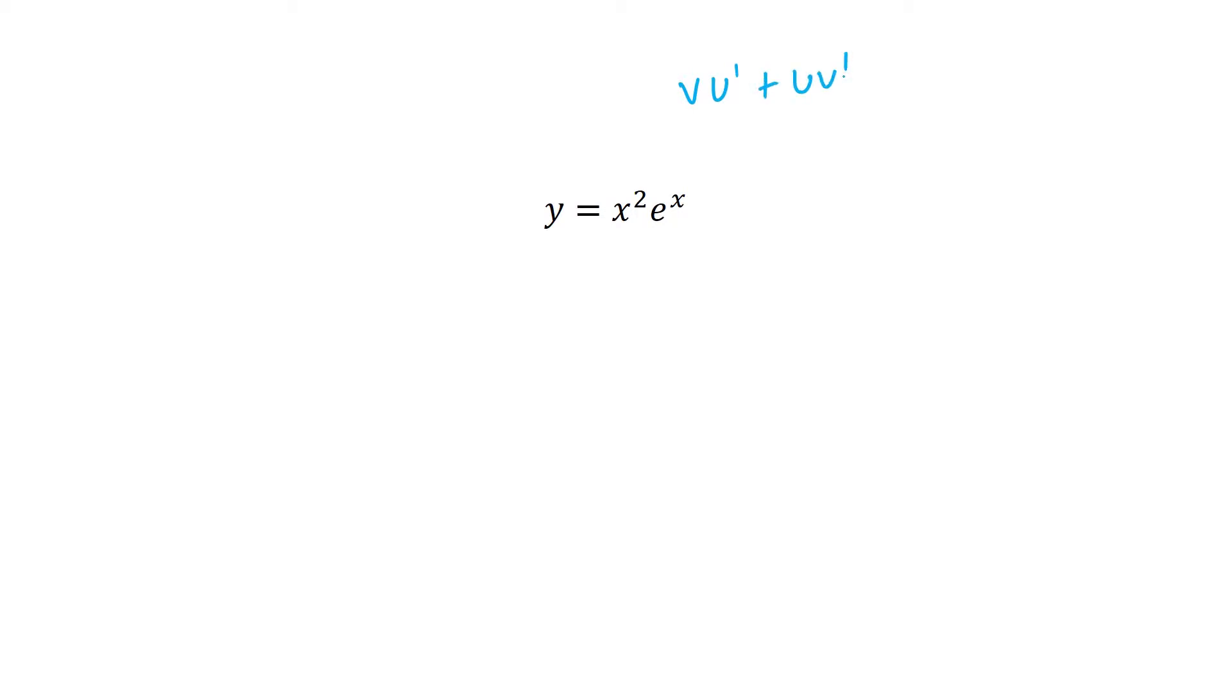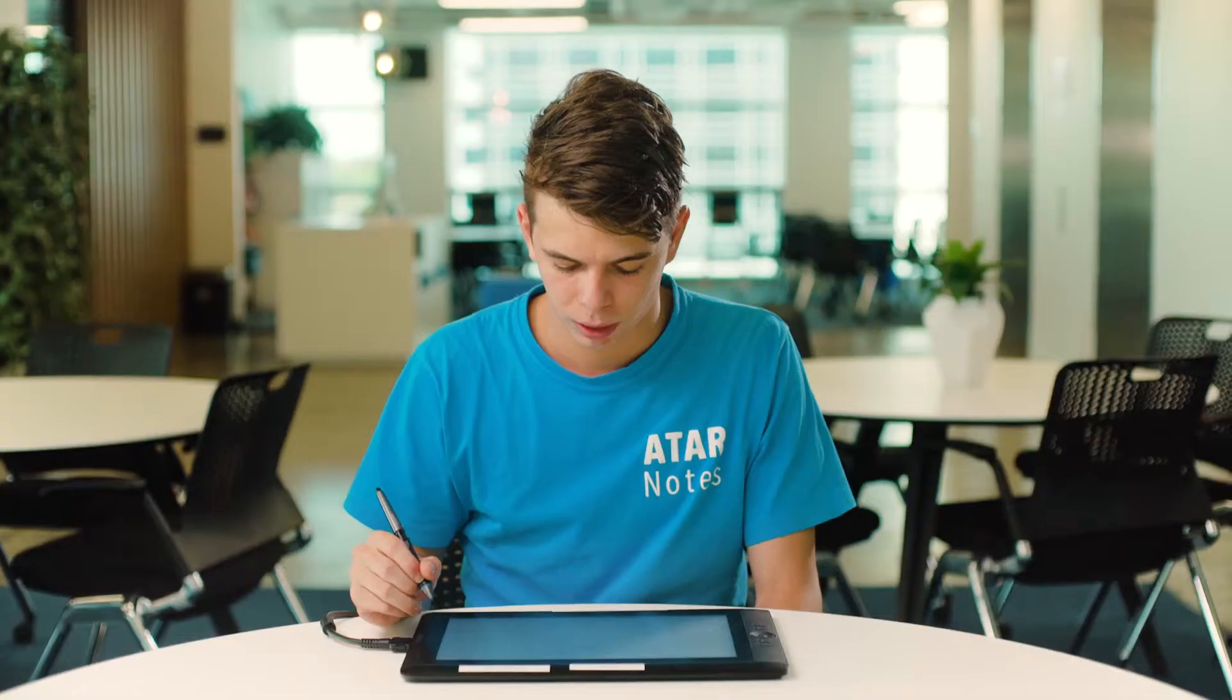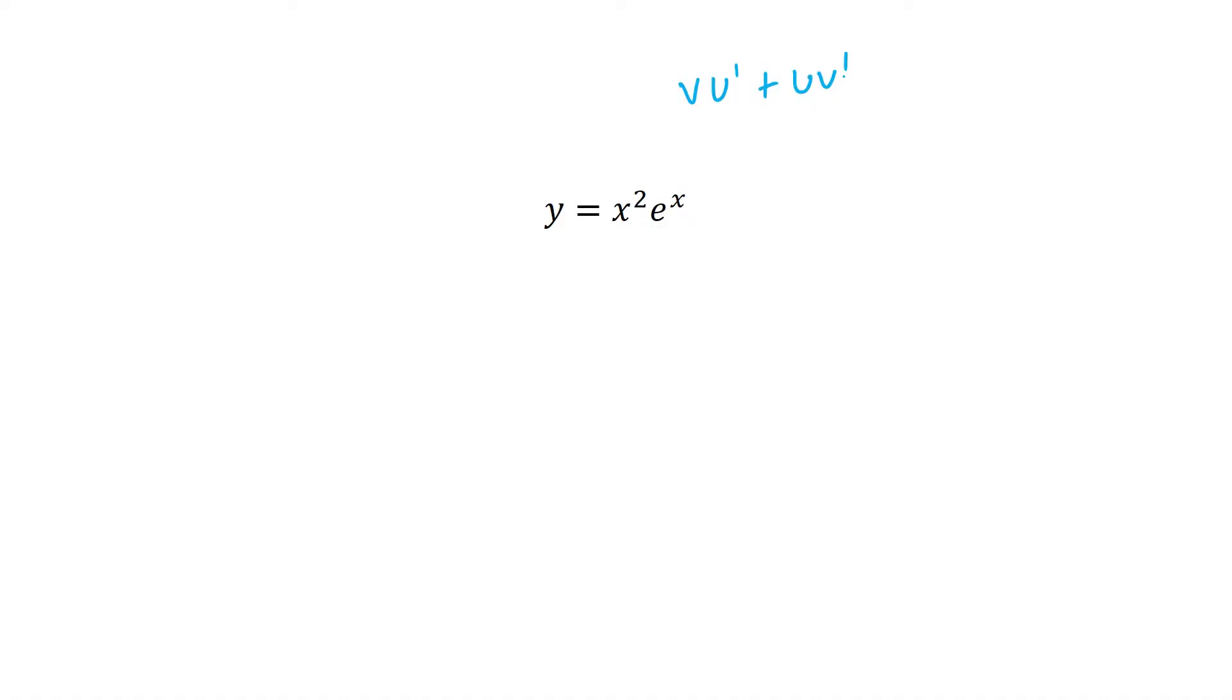With u dash signifying the derivative of u and v dash signifying the derivative of v. So we'll find them individually. First we'll assign values. So x squared is going to be u and e to the power of x is going to be v.